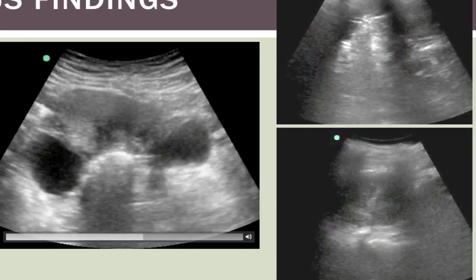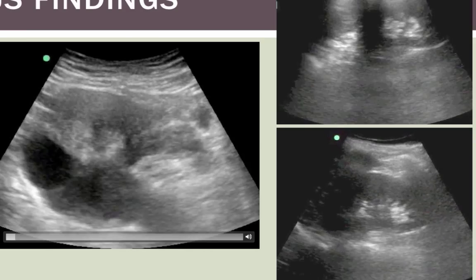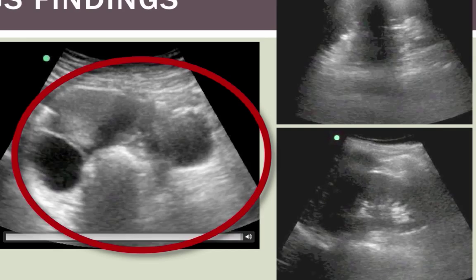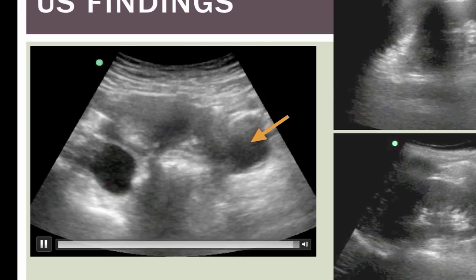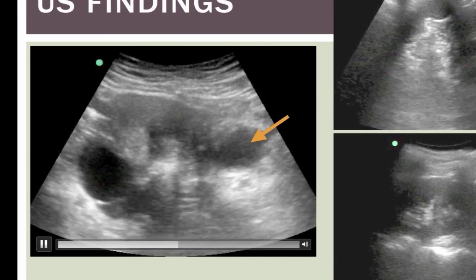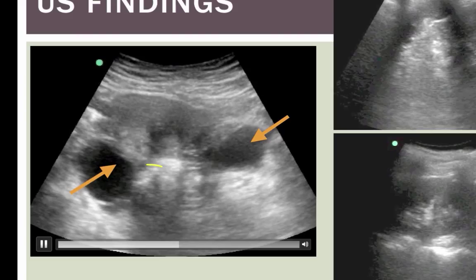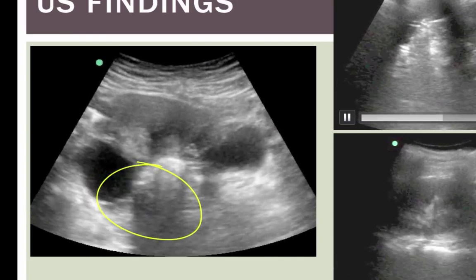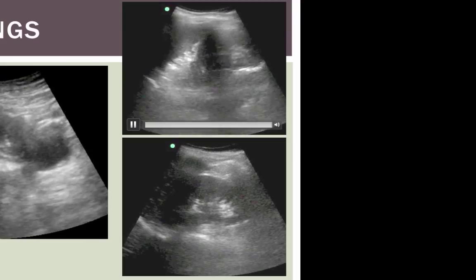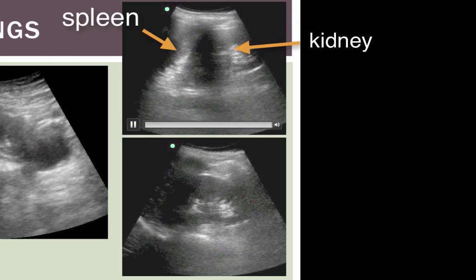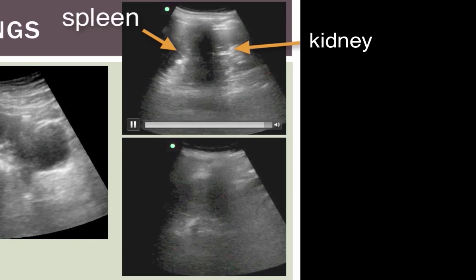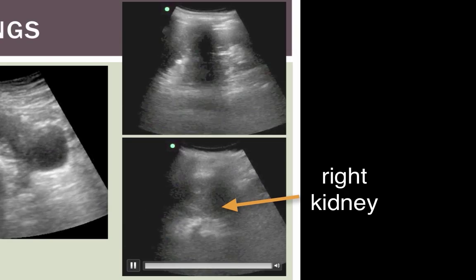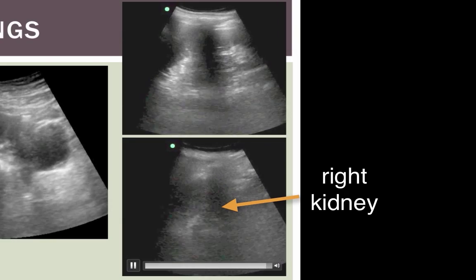Some of you probably have already caught on to these pictures being a little bit different. Here's our transabdominal view of the uterus. We've got what looks like some kind of cyst over here, cyst over here, maybe something going on here - a mass or cyst. Looking up in the rest of the abdomen, this is the spleen in the left kidney. We don't see any free fluid up here, and this is the right kidney in Morrison's, and I don't see any obvious free fluid.